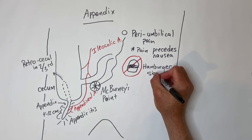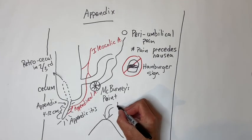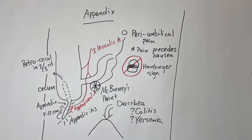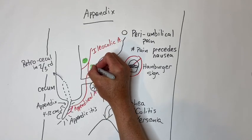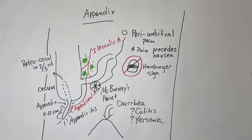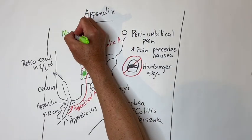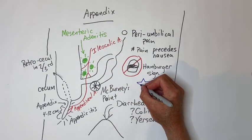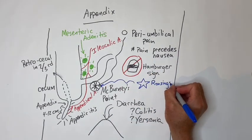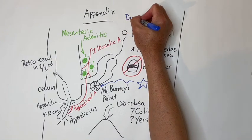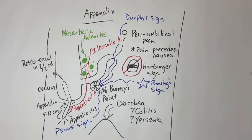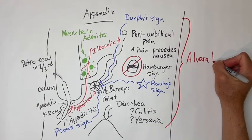Always ask about diarrhea, which can occur with appendicitis, but could also be a clue to infectious colitis — which can sometimes present with right lower quadrant pain, such as in Yersinia infections. Sometimes children will have large inflamed lymph nodes in the bowel mesentery called mesenteric adenitis that can mimic appendicitis and needs no treatment. Other named signs include Rovsing's sign, Dunphy sign, and the psoas sign. The Alvarado score uses these factors along with lab findings to grade the likelihood of appendicitis.